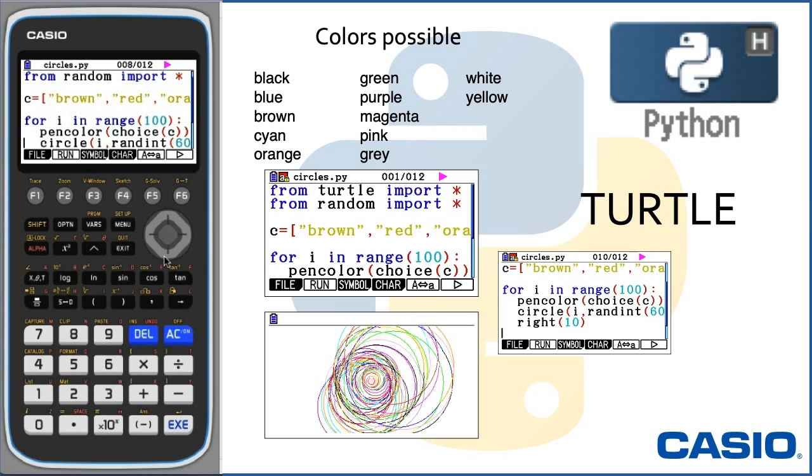So it'll be one circle of radius one. It's going to pick a random integer from 60 to 360 as a turn value. And then it'll go right 10. So each one of them will be slightly off centered from the one before it.